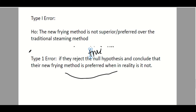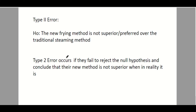In the type 2 error, the null hypothesis becomes a false claim — the new frying method is not preferred, but this is already false. We accept it anyway, which is why we committed a type 2 error. Our conclusion is that their new method is not superior when in reality it is. We accepted the false null hypothesis. So thank you for listening.